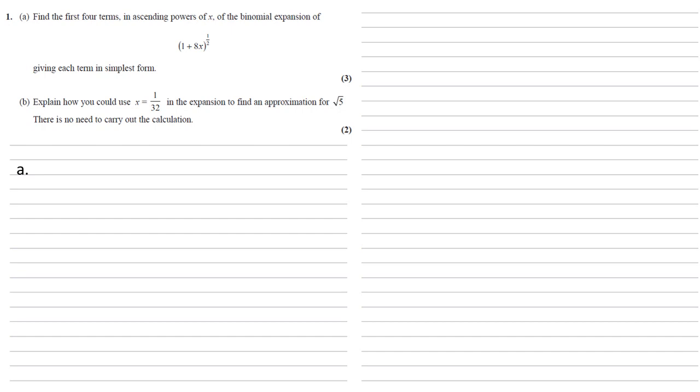So we've got our (1 + 8x)^(1/2) using our normal method of binomial expansion. The first term is the 1 from the beginning of the bracket. Our second term is our power of a half times by the other term in the brackets, the 8x.